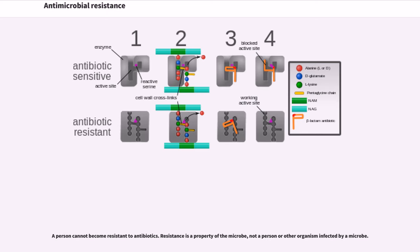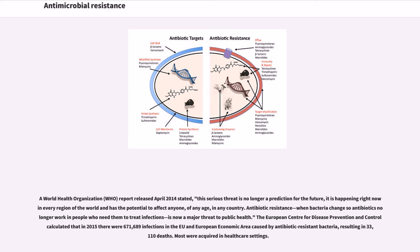A World Health Organization, WHO, report released April 2014 stated: 'This serious threat is no longer a prediction for the future, it is happening right now in every region of the world and has the potential to affect anyone, of any age, in any country.' Antibiotic resistance is now a major threat to public health. The European Center for Disease Prevention and Control calculated that in 2015 there were 671,689 infections in the EU and European economic area caused by antibiotic resistant bacteria, resulting in 33,110 deaths.